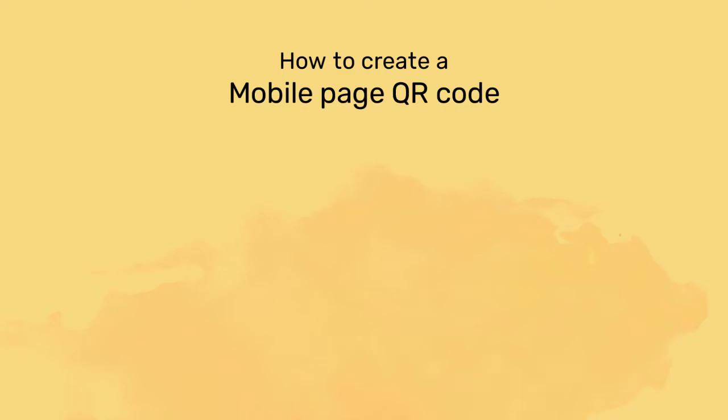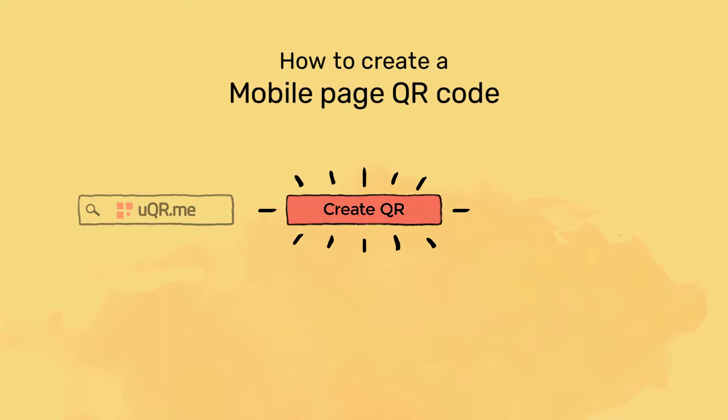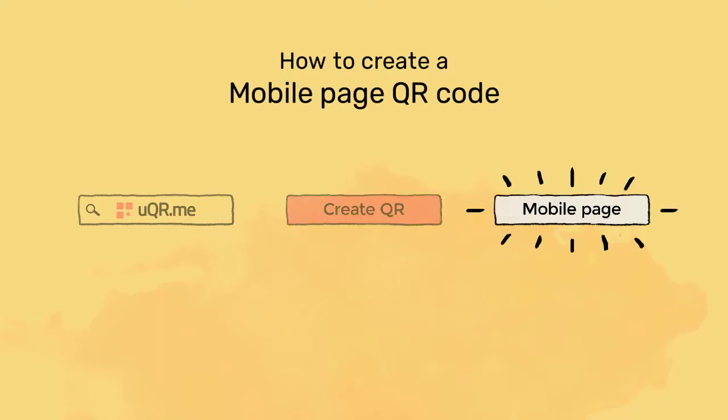If you want to create a mobile page QR code, all you need to do is register to UQ Army, click Create QR, and select the type. It's as simple as that.